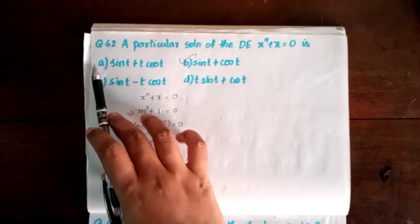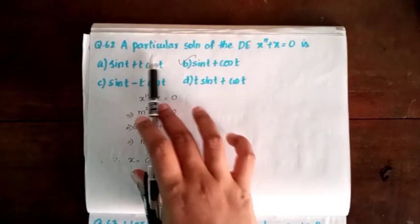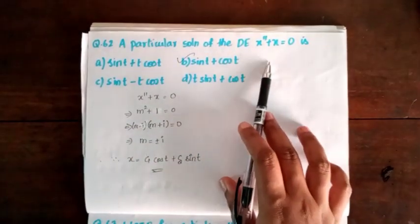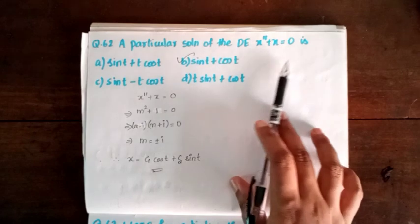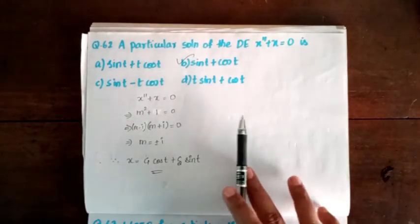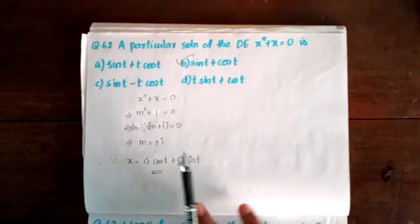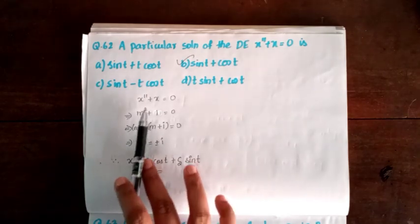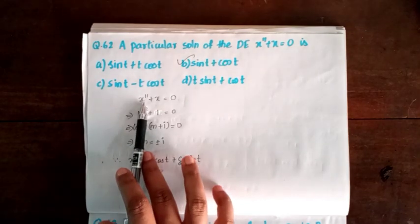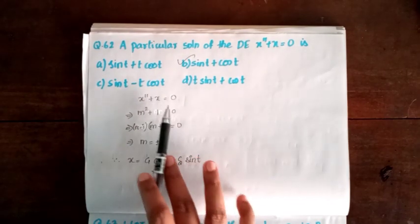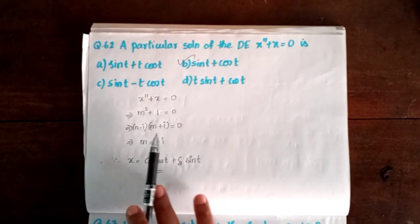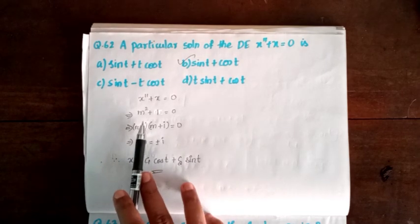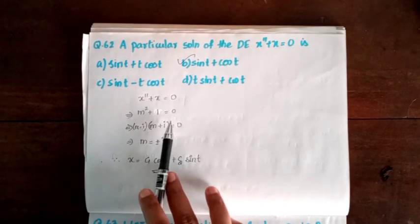Next, Question 62. A particular solution of the differential equation x double prime plus x equal to 0. We write the characteristic equation: m² plus 1 equal to 0.